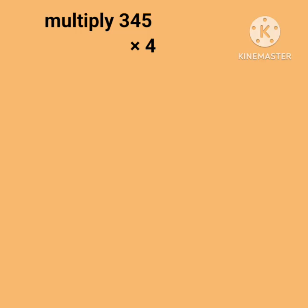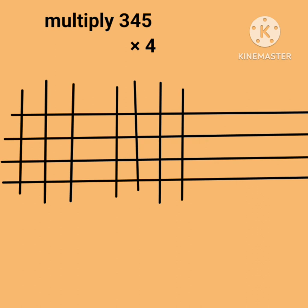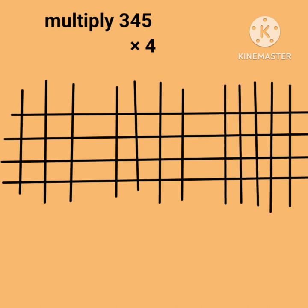Multiply 345 by 4. Draw 4 horizontal parallel lines. Now draw 3 vertical lines first, then again draw 4 vertical lines, and at last draw 5 parallel lines. Now counting the points of intersections and writing them down accordingly — it comes out to be 20.